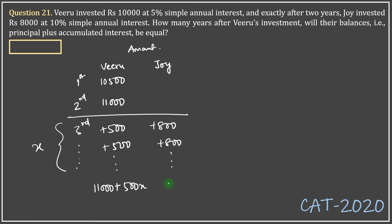Whereas Joy's amount would become 8,000 plus 800x. The amounts should be equal, so I get 300x equals 3,000, or x equals 10.